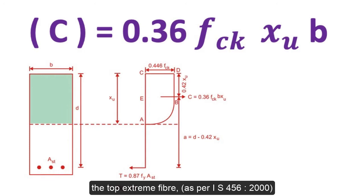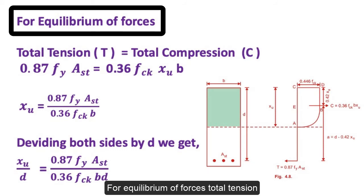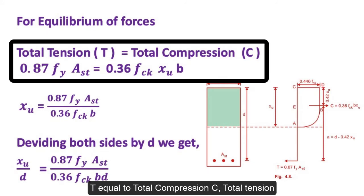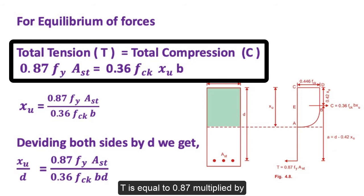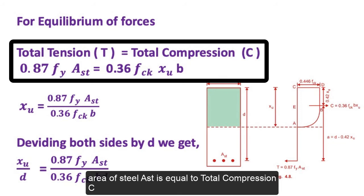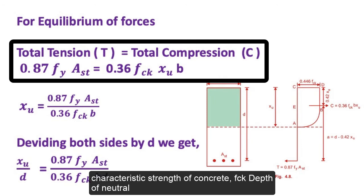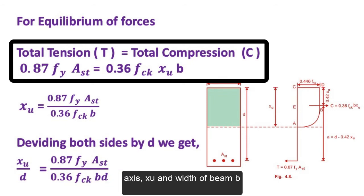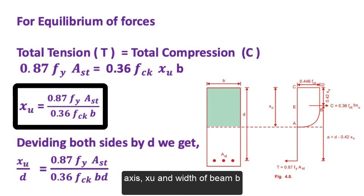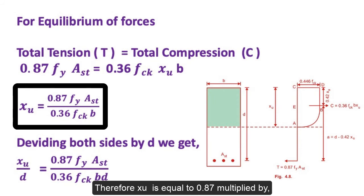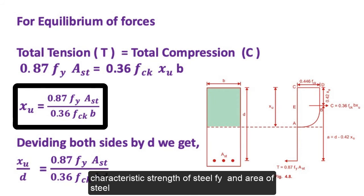For equilibrium of forces, total tension T equals total compression C. Therefore: 0.87 × f_y × A_st = 0.36 × f_ck × x_u × b.